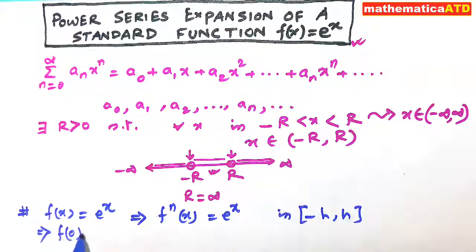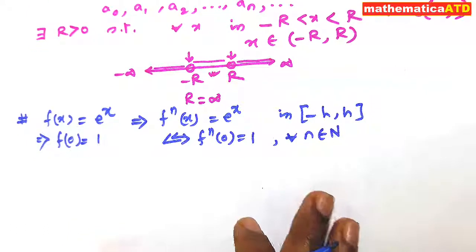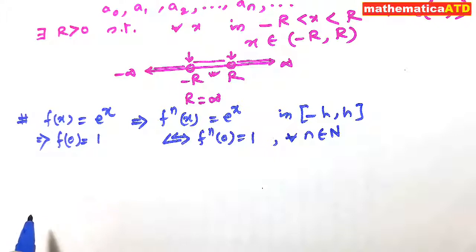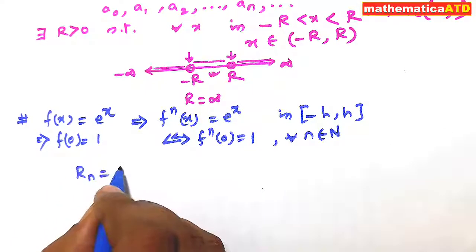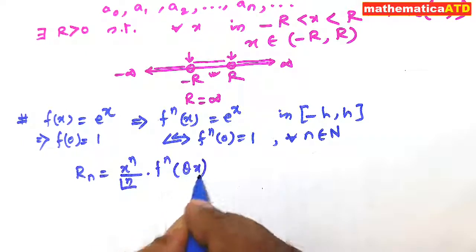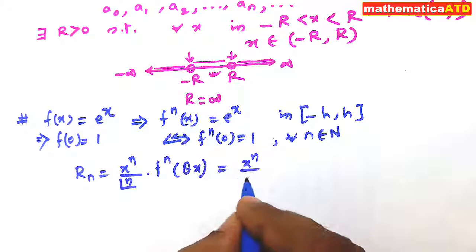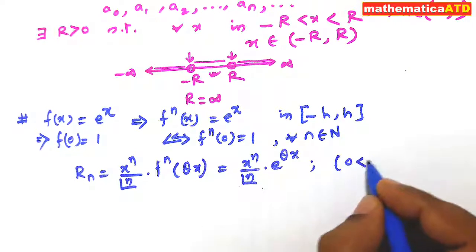From here, f(0) = e^0 = 1, and f^(n)(0) = 1 as well, since e^0 = 1, for all n belonging to the set of natural numbers. Now we shall see Lagrange's remainder R_n. The Lagrange's remainder R_n after n terms in Maclaurin's finite development is: R_n = x^n / n! * f^(n)(θx) = x^n / n! * e^(θx), where 0 < θ < 1.